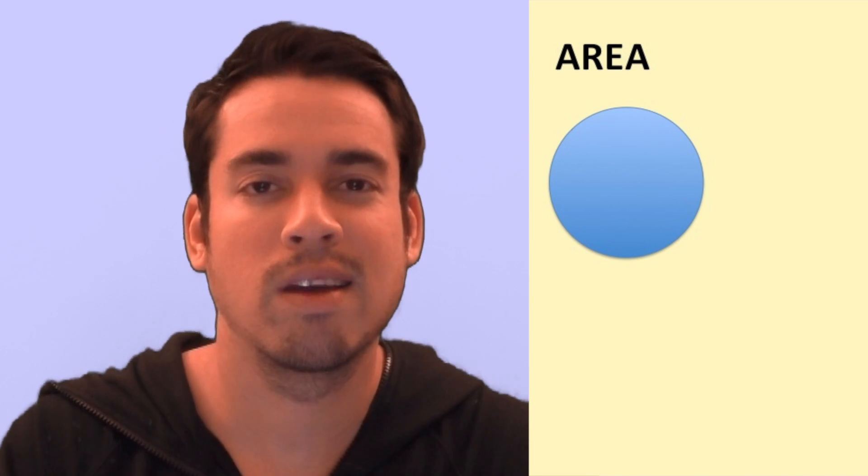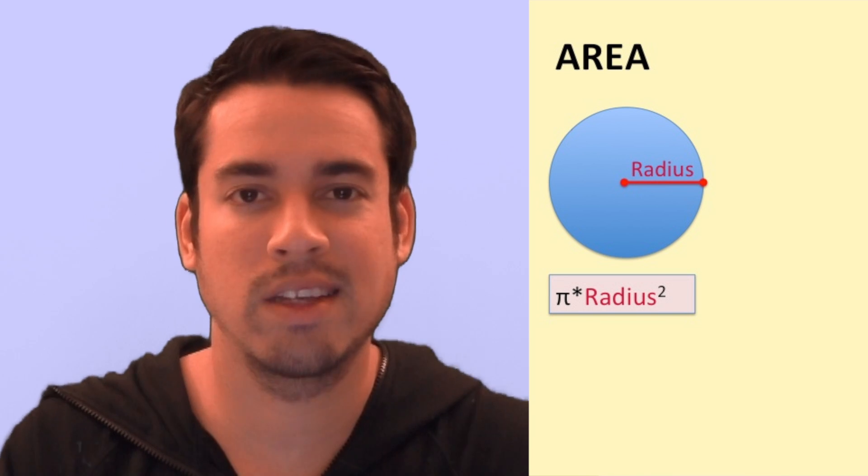The next formula that you're going to need to know is how to calculate the area of a circle. So this is kind of similar to the formula for circumference. It's simply pi times the radius squared.